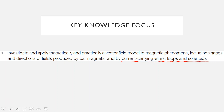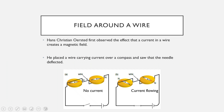First up we're going to look at just a wire. So basically this guy here, Hans Christian Ørsted, a Danish physicist, was doing a lecture one day and he had some compasses on a table in front of his lecture hall. He was playing around with electricity and he noticed that when he turned on the circuit he was demonstrating, the compass needles moved.